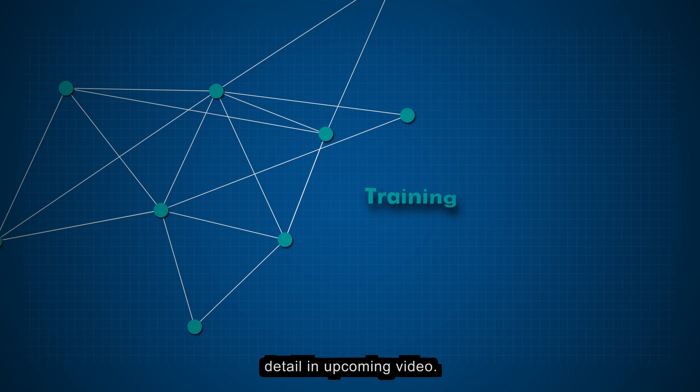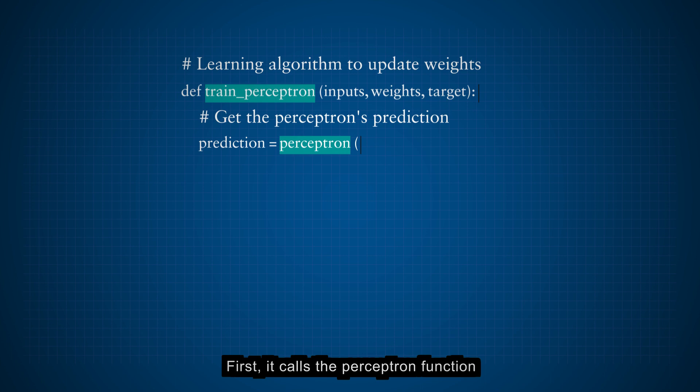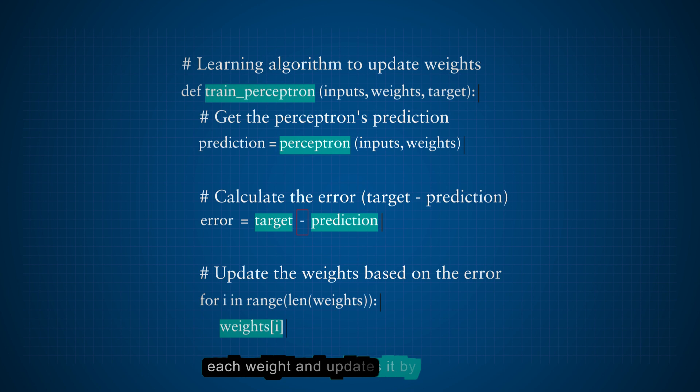The trained perceptron function takes inputs, weights, and the target, the correct output for the input, as parameters. First, it calls the perceptron function to get the perceptron's prediction for the given inputs and weights. Then, it calculates the error by subtracting the prediction from the target. The error represents how far off the perceptron's prediction was from the actual target. Finally, the function updates the weights to reduce the error. It iterates over each weight and updates it by adding the product of the error and the corresponding input. This step is what allows the perceptron to learn from its mistakes and improve its accuracy over time.